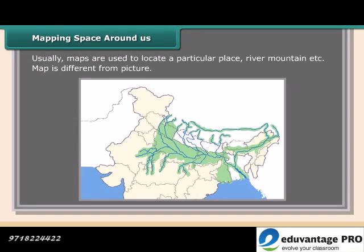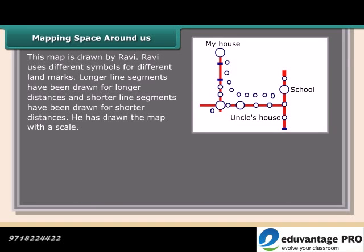Maps are used to locate a particular place such as a river or mountain. A map is different from a picture. This map drawn by Radha shows the route from her house to her uncle's house, but it is very difficult to find distances because there is a lack of information. Ravi's map uses different symbols for different landmarks, with longer line segments for longer distances and shorter line segments for shorter distances, drawn with a scale.